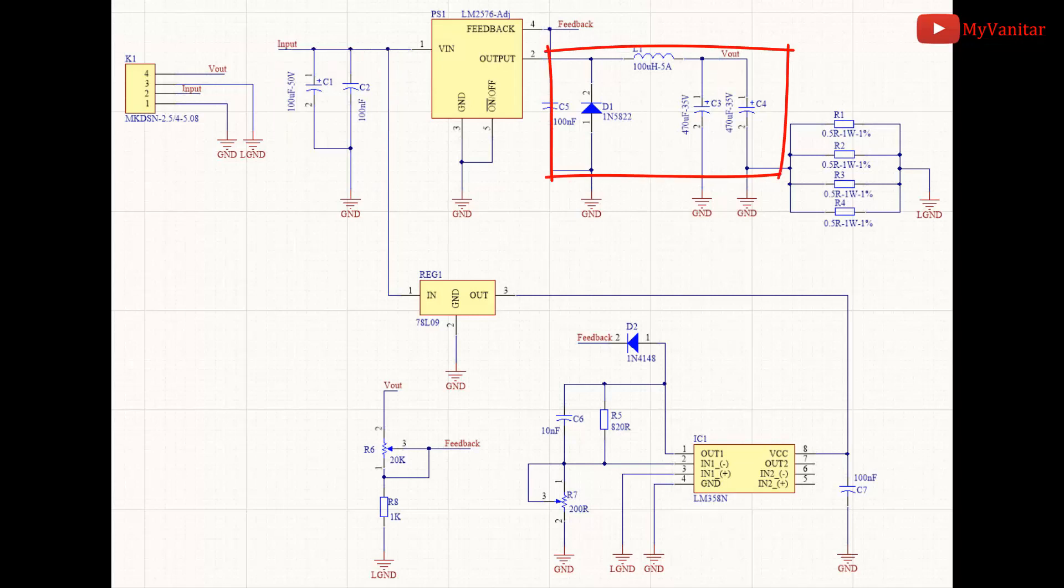This inductor, diode, and these two capacitors are the typical buck converter essential components. The voltage on the feedback pin of the switching regulator defines the output voltage and current. The R6 potentiometer sets the voltage and R7 potentiometer sets the current limit. For the current sensing, I used four resistors in parallel that makes one stable shunt resistor.